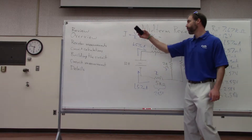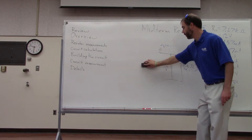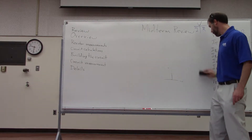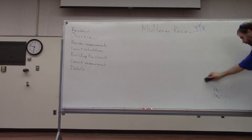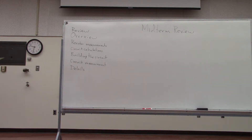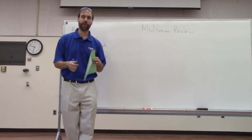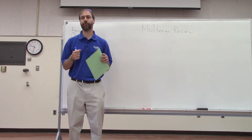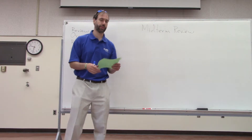That was a brief review of this circuit. Let's do a quick overview of the midterm. Everybody should have a handout — if not, there are copies on the table. You're going to get some resistors, measure their values, write them down, write down the band colors that should be on those resistors, and then build a circuit just like the one we just went through.